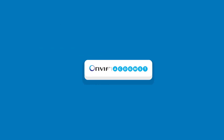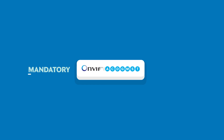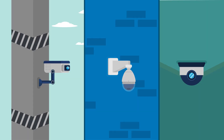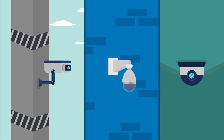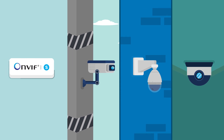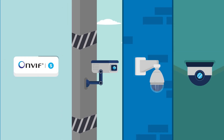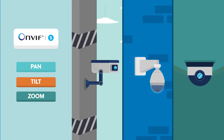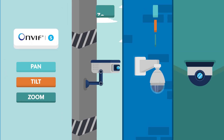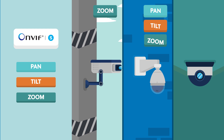An ONVIF profile has mandatory and conditional features. For instance, a conditional feature in Profile S is support for pan-tilt-zoom control, which applies only to specific cameras like PTZ cameras.